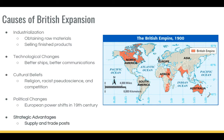And lastly, of course, Britain wanted to expand just for strategic advantages. They wanted supply posts and trading posts as many as they could all around the world. For example, it's much easier to go from Britain to India if you can stop over and refuel or resupply in British South Africa.